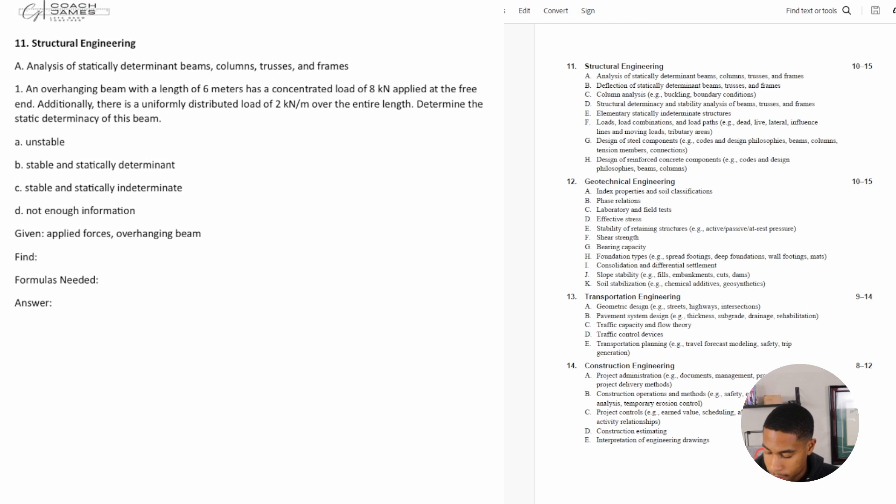This one, number one, says an overhanging beam with a length of six meters has a concentrated load of eight kilonewtons applied at the free end. Additionally, there is a uniformly distributed load of two kilonewtons per meter over the entire length. Determine the static determinancy of this beam.